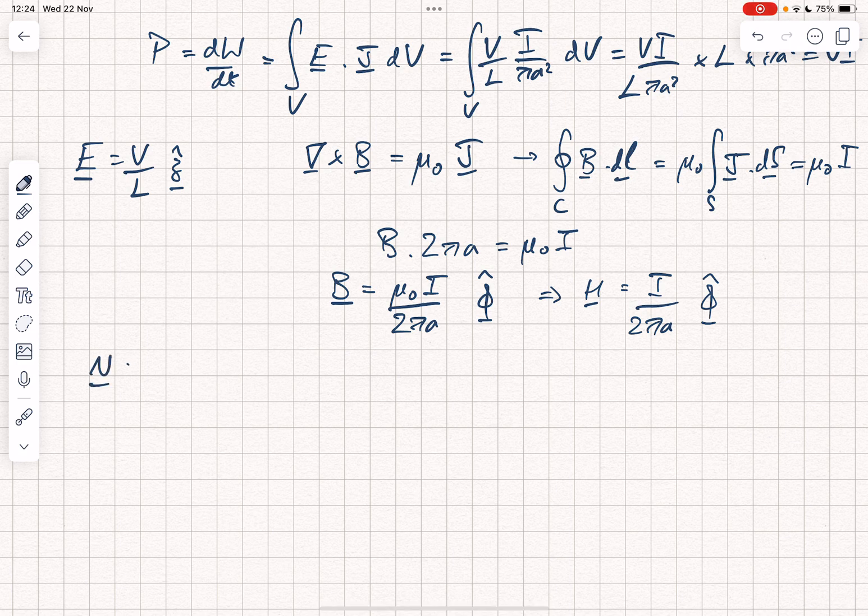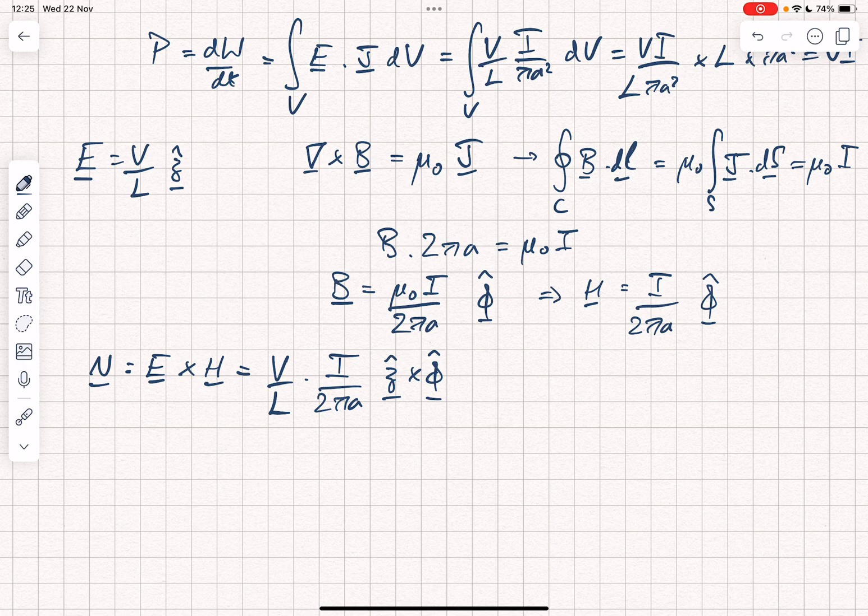So, Poynting's vector N is equal to E crossed with H. And that's going to have the magnitude of V over L multiplied by I over 2 pi A. And the direction is going to be the cross product of Z and phi. Now, the cross product of Z and phi is the inward radial direction. So what we would have to write is minus VI over 2 pi A L R hat.